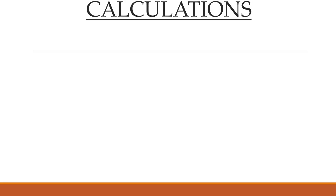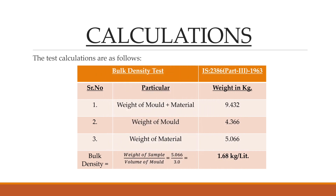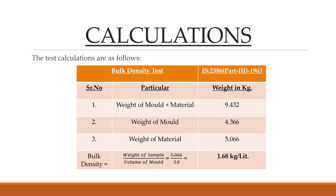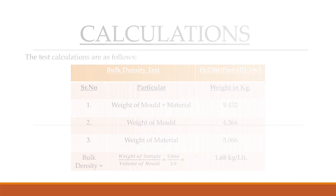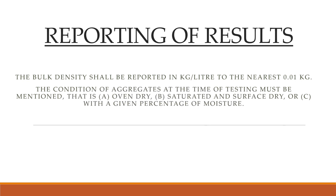The calculation for determining bulk density is as follows. The bulk density shall be reported in kilograms per liter to the nearest 0.01 kilograms. The condition of aggregates at the time of testing must also be mentioned, that is, oven dry, saturated and surface dry, or with a given percentage of moisture.